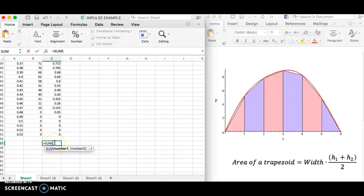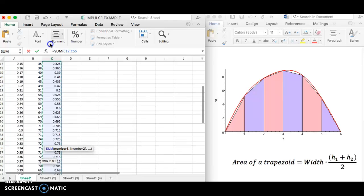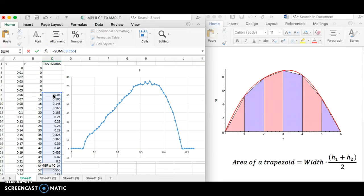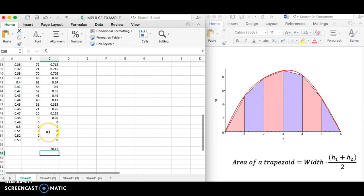So that's the function I'm using. I'll type equals to make it be a formula, sum of, and then I just highlight all the cells that I want to use. Close parentheses, enter, and there we go. So the impulse for my bogus made up data is 20.17 newton seconds. And that took hardly any time at all.